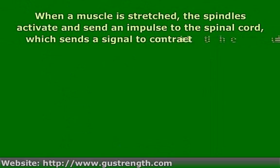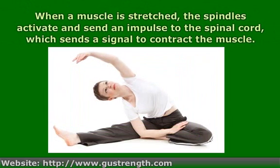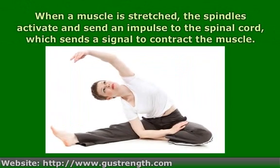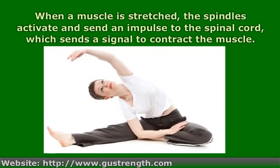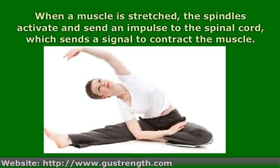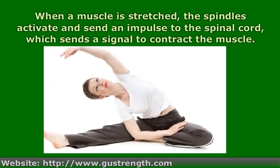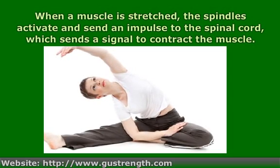When a muscle is rapidly stretched, the muscle spindles within it also change length, which activates them and causes an afferent impulse to be carried by a sensory neuron to a motor neuron synapse in the spinal cord. This causes an impulse to be carried back to the muscle, causing it to contract. The strength of this contraction depends on the magnitude and weight of the movement which caused the stretch.